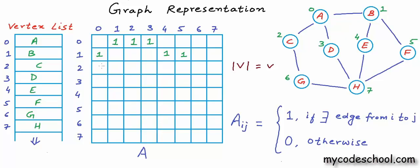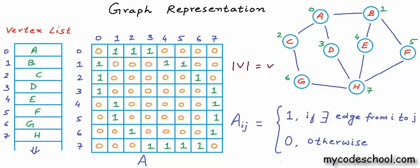Node 2 is connected to 0 and 6. Node 3 is connected to 0 and 7. Node 4 is connected to 1 and 7. Node 5 is connected to 1 and 7. Node 6 is connected to 2 and 7. And node 7 is connected to 3, 4, 5, and 6. All remaining positions in the array are set to 0. Notice that this matrix is symmetric — for an undirected graph, A[i][j] equals A[j][i].